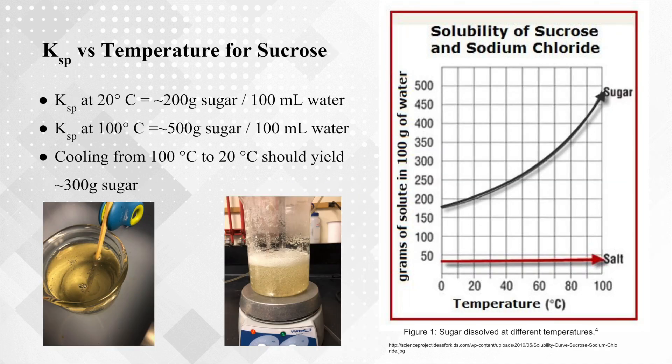As was stated earlier, the KSP often varies with temperature, especially in the case of sugar. These are just some numbers to go along with what was talked about earlier. You can see that at 20 degrees, the KSP for sugar is roughly 200 grams of sugar per 100 milliliters of water. When you increase the temperature of the water to 100 degrees, that jumps up to nearly 500, so a lot more sugar can be dissolved in the higher temperature water. Therefore, when you cool the sugar from that 100 degrees to 20 degrees, you should yield about 300 grams of sugar in the form of crystals.